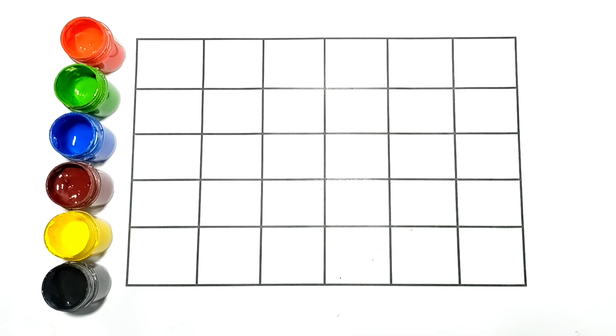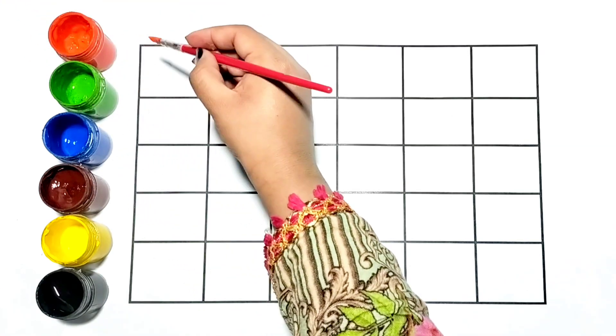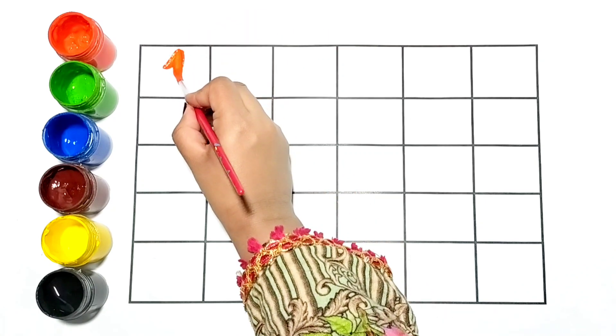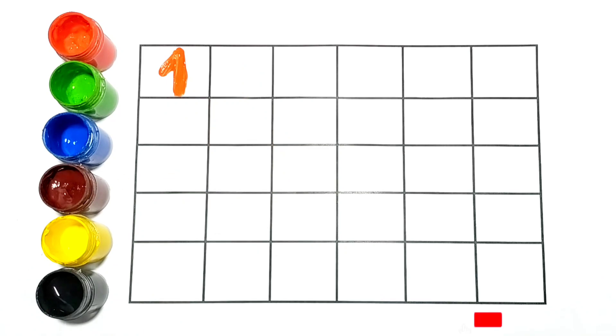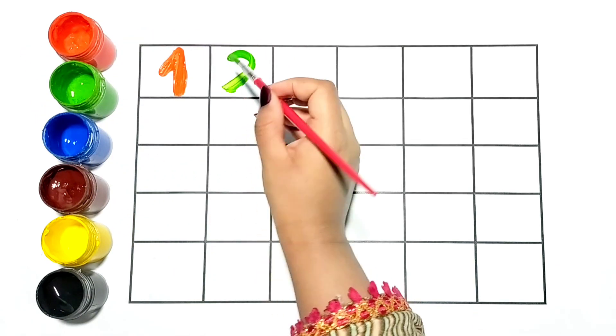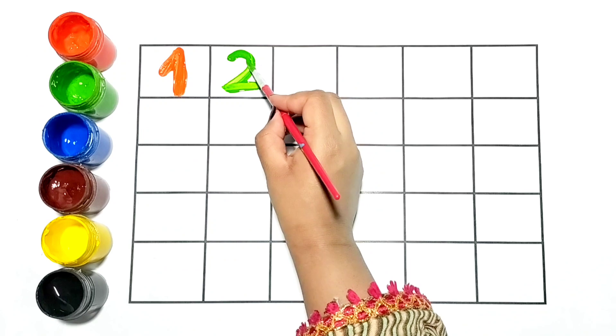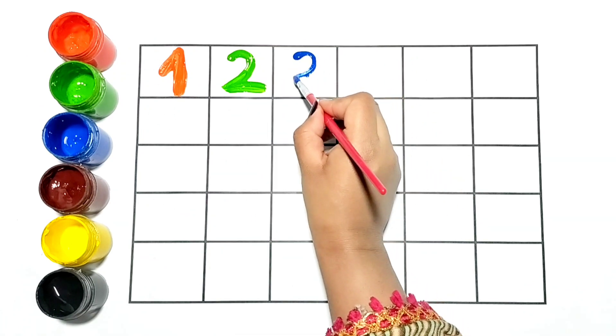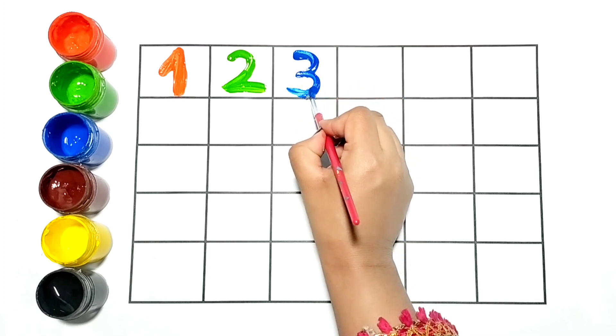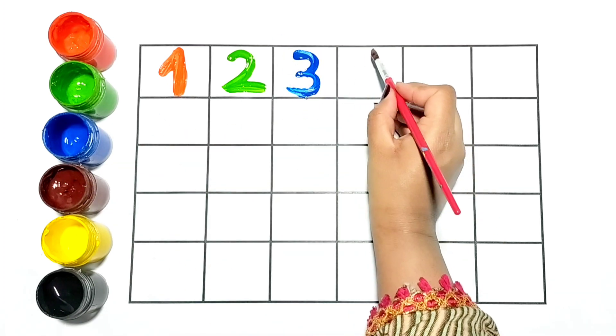Let's start writing in boxes with lovely colors. Let's write one. I am writing one with orange color. Let's write two. I am writing it with green color. Now I am writing three with blue. This is number 4, brown.